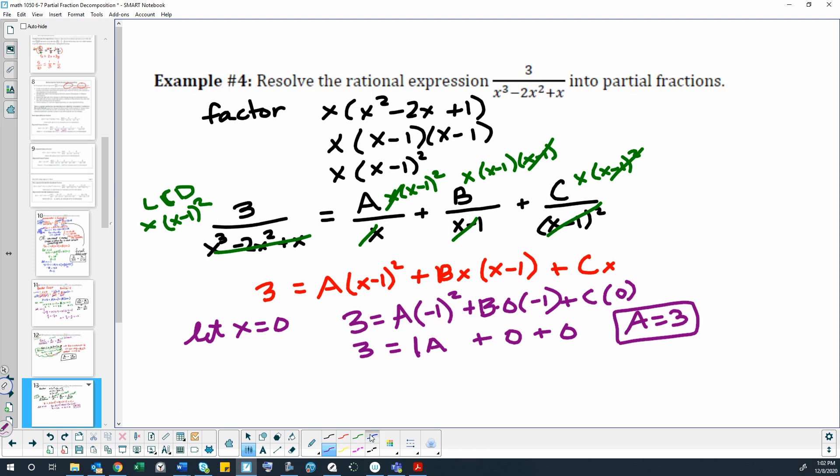Now I'm going to let x equal 1. So that would give me 3 equals A times 1 minus 1 squared plus B times x times 1 minus 1 plus C times 1. So 3 equals 0 times 0 times A plus 0 times B plus C. So 1C equals 3, so C also equals 3.